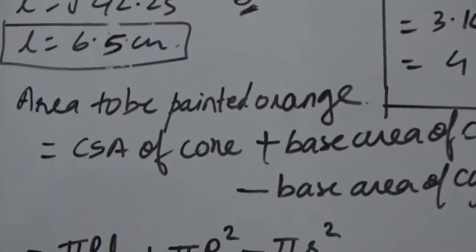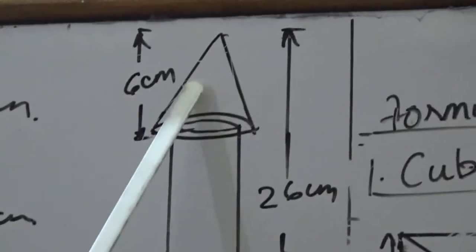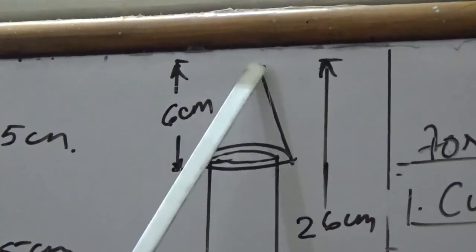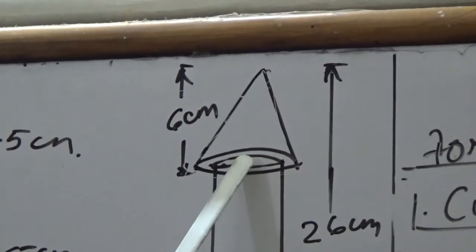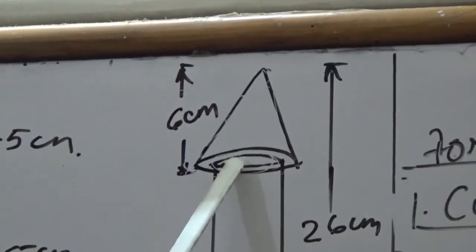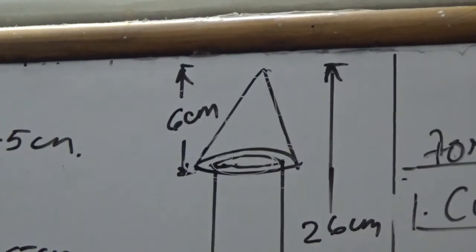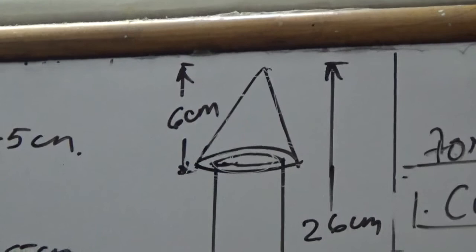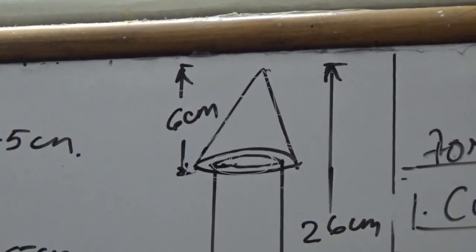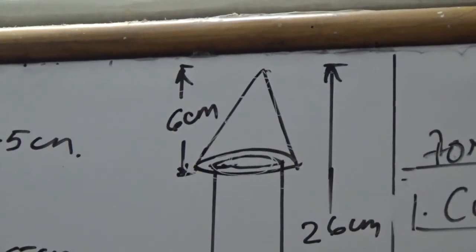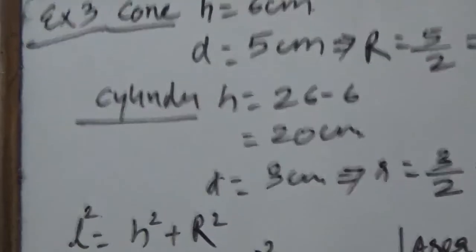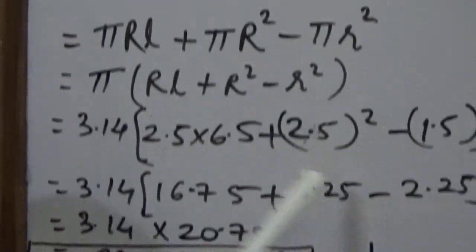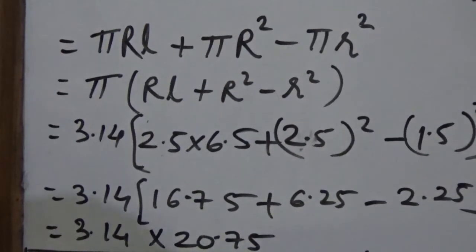Area to be painted orange = CSA of cone + base area of cone − base area of cylinder. This is because the top of the cylinder is not painted orange. So: πRL + πR² − πr² = π(RL + R² − r²). Substituting R = 2.5, L = 6.5, r = 1.5 and calculating, we get the area to be painted orange as 63.585 cm².